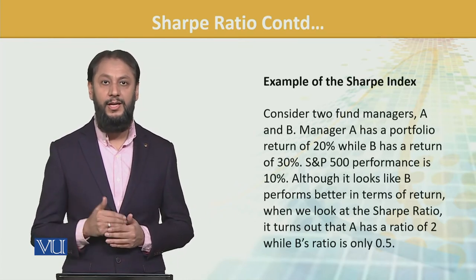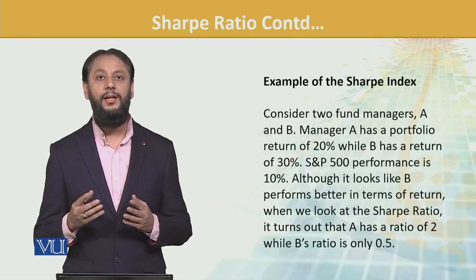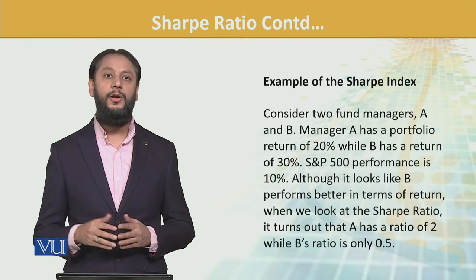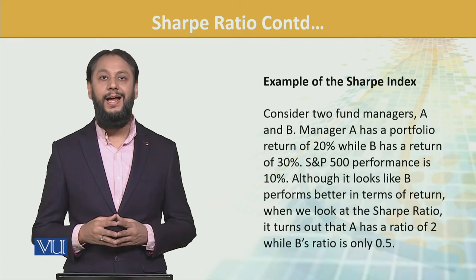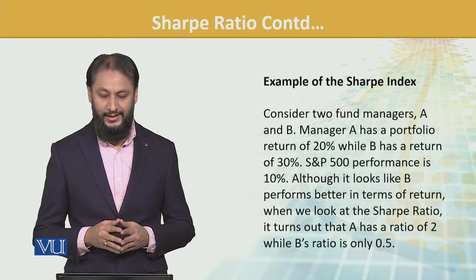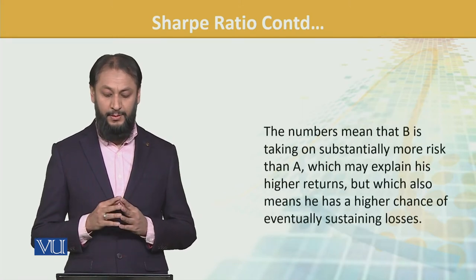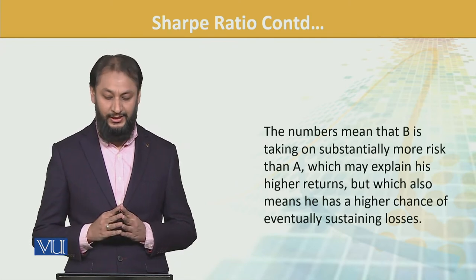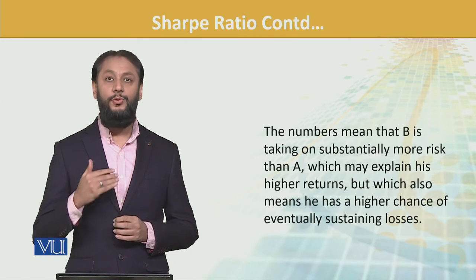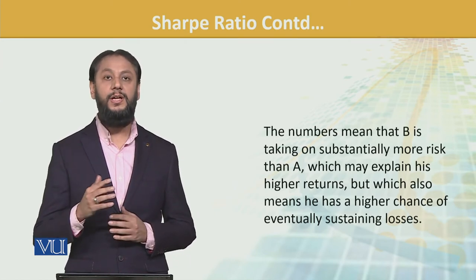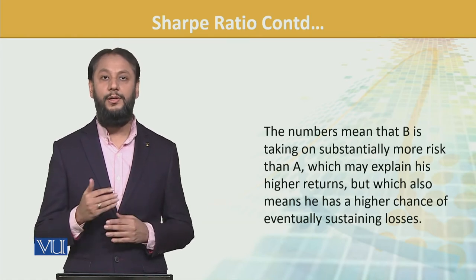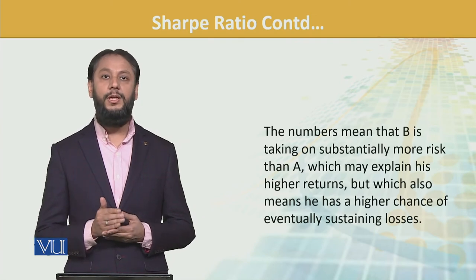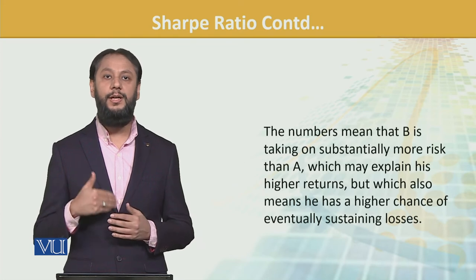So A का absolute return कम था, लेकिन उसकी Sharpe ratio ज्यादा है. इसका मतलब ये है कि जो हमारा B है, उसने बहुत huge level का risk लिया है, जिसकी वजह से उसका return तो बहुत ज्यादा आ गया है. लेकिन the risk-adjusted return is far less. B is taking on substantially more risk than A, which may explain his higher return. उसका return तो बढ़ गया है, लेकिन risk-adjusted return अच्छा नहीं है. And it also means higher chances of substantially loss in his portfolio in the next period in the long run, because he has taken absolutely high risk. Just absolute returns important नहीं हैं — we have to see the risk-adjusted return.